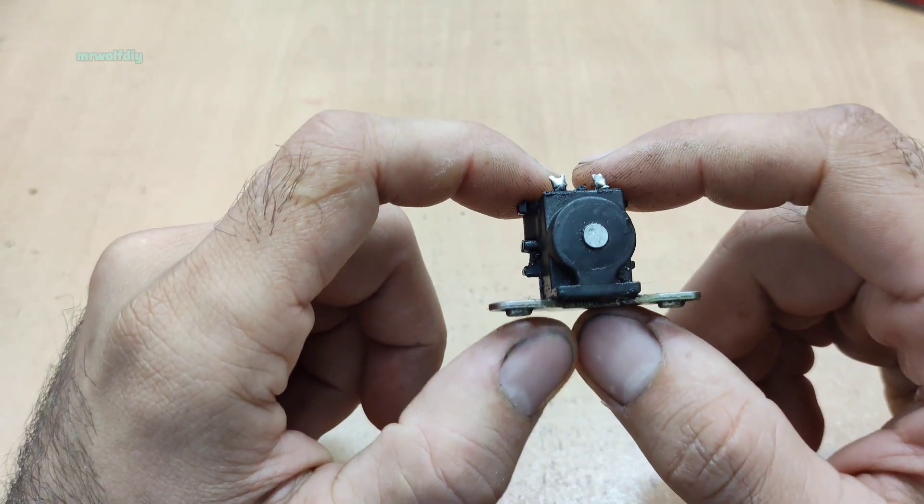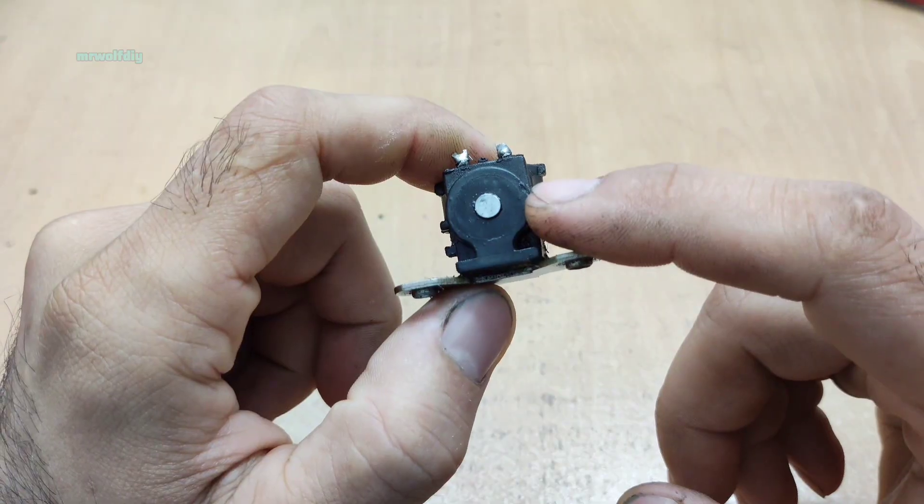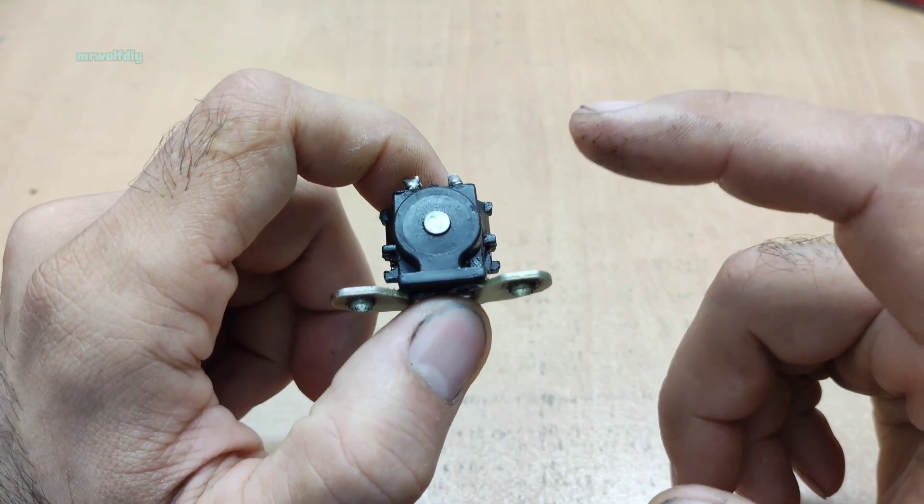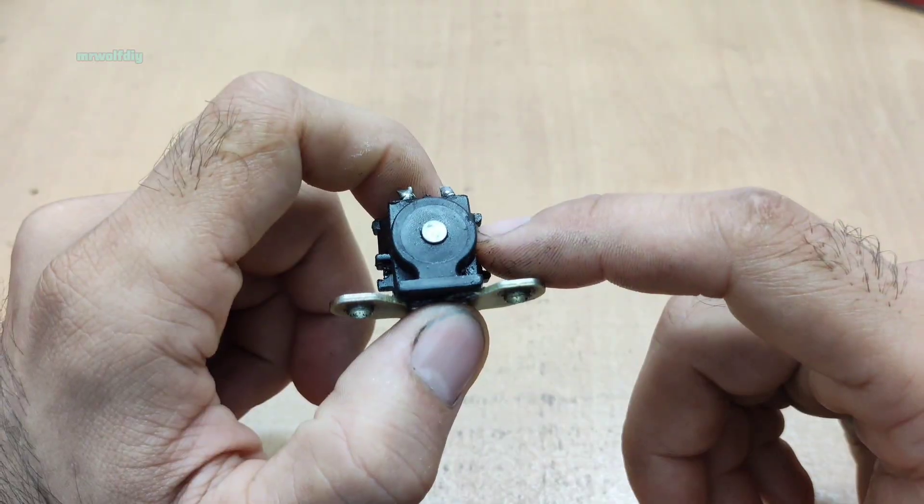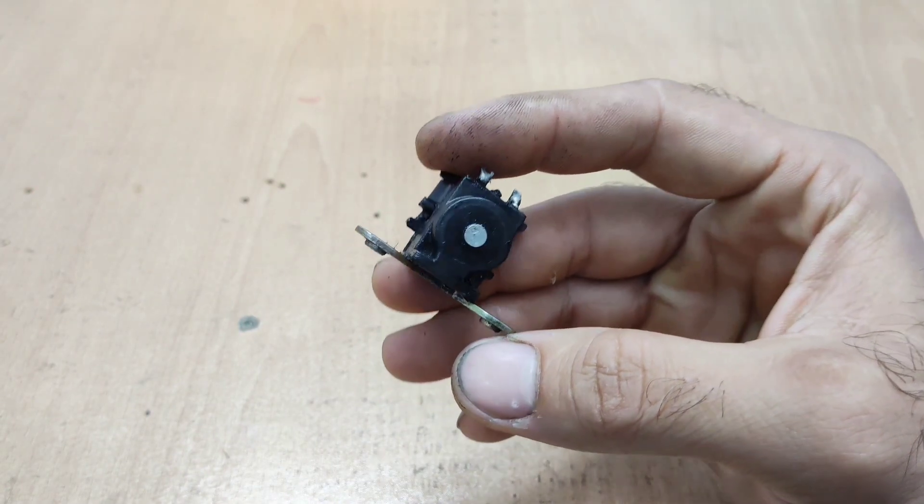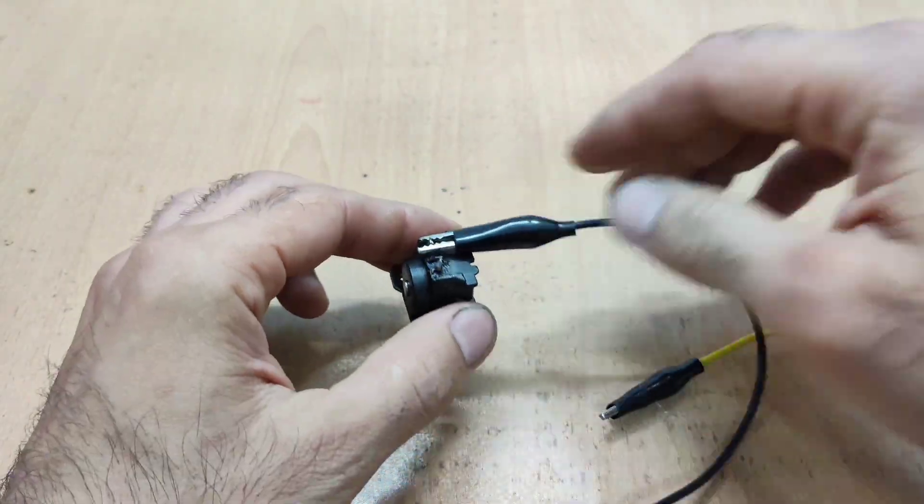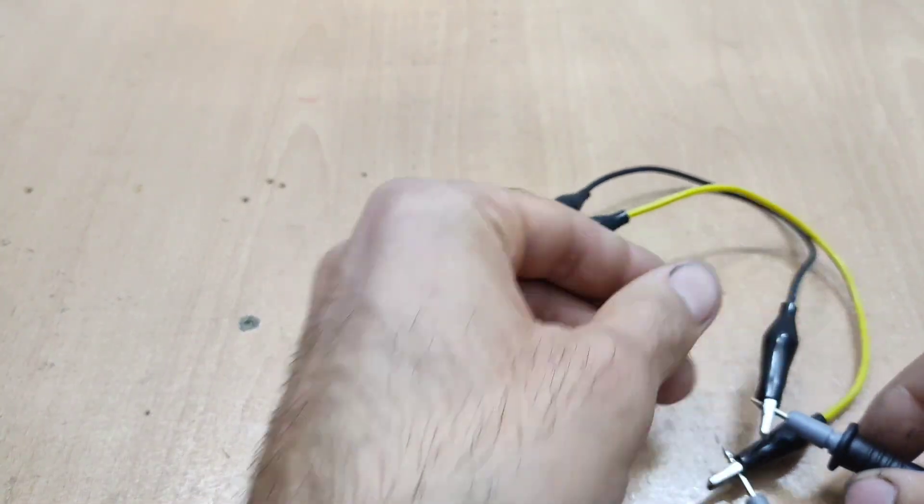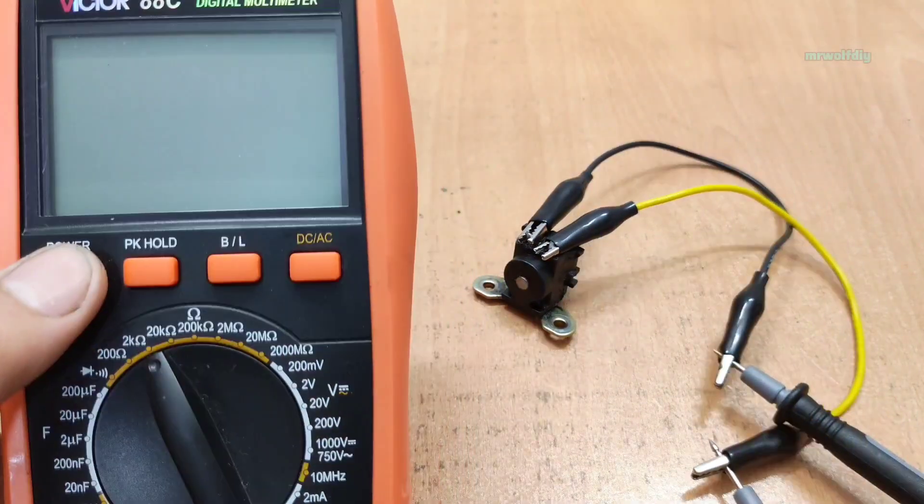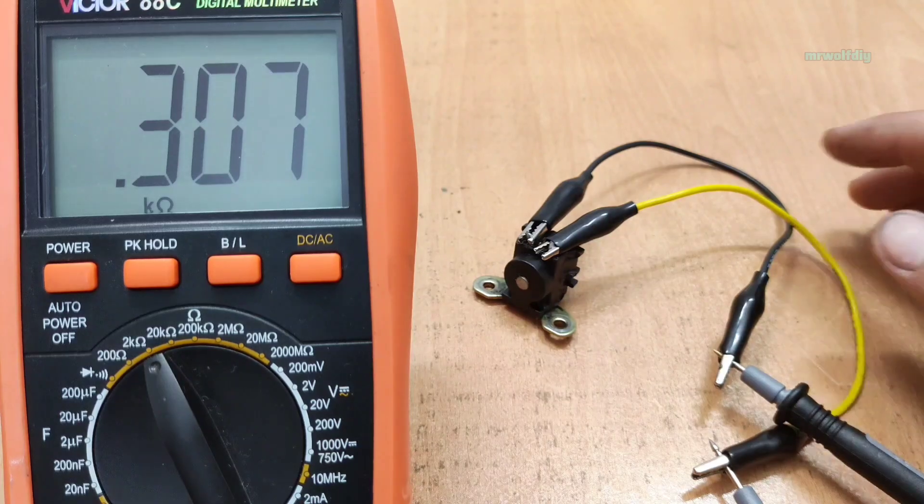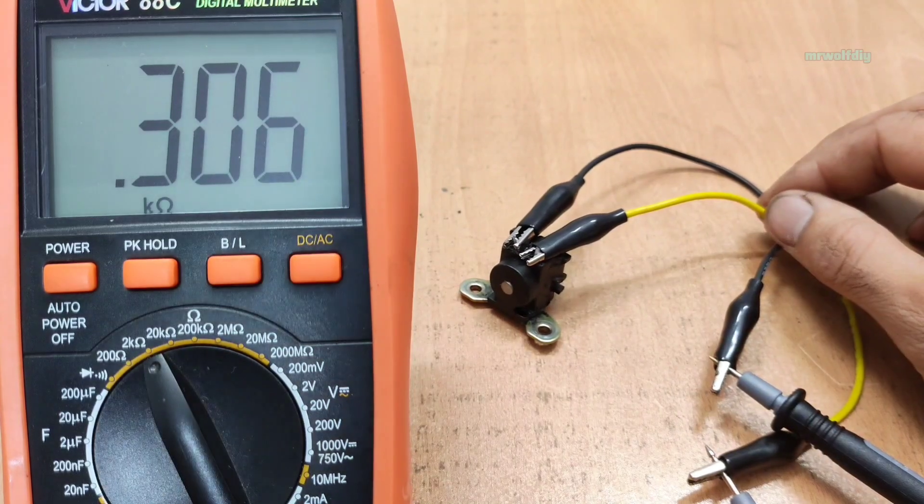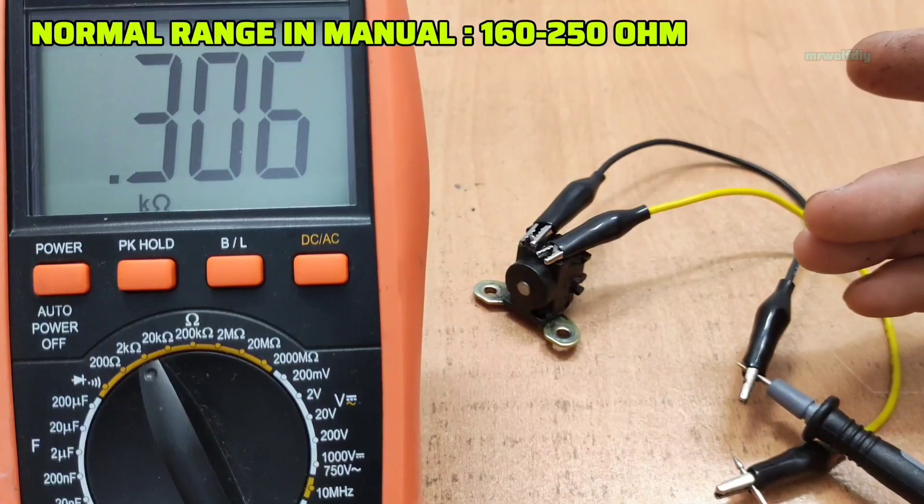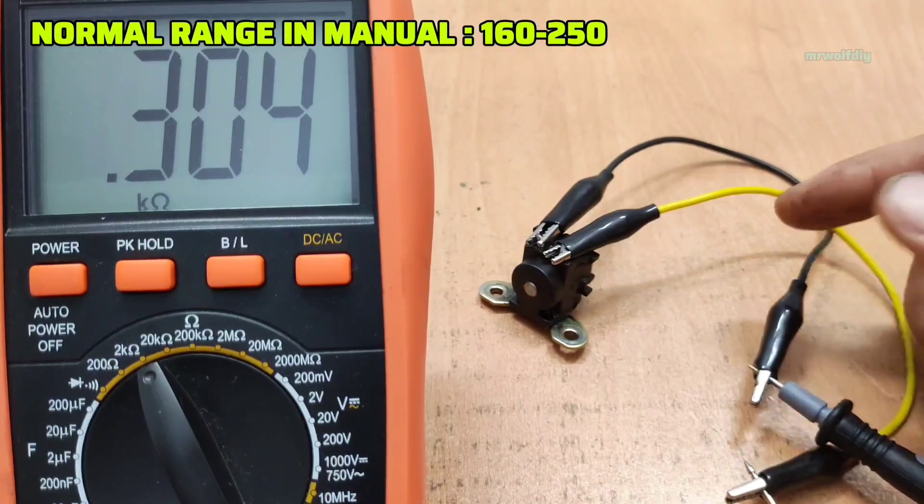This pickup is from a Suzuki trail bike. After running for about 50 minutes, the engine would completely shut off and I replaced it. First, let's check its resistance value. As you can see, the resistance value is really higher than normal, even when it's cold.